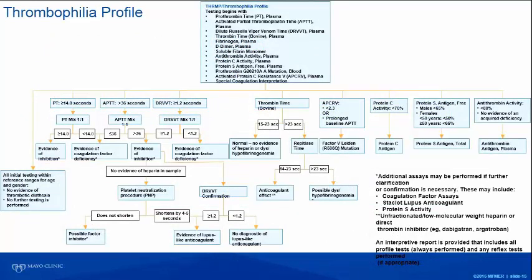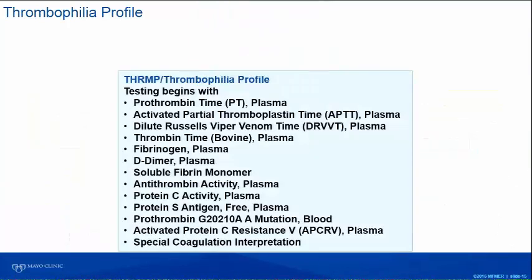That covers an algorithmic approach on whom to test. If you do decide to test, the Mayo Clinic Special COAG Lab through Mayo Medical Lab offers an algorithmic approach to thrombophilia testing. It starts off with some basic protein-based tests, except for the prothrombin gene mutation for which there's really no protein-based testing.